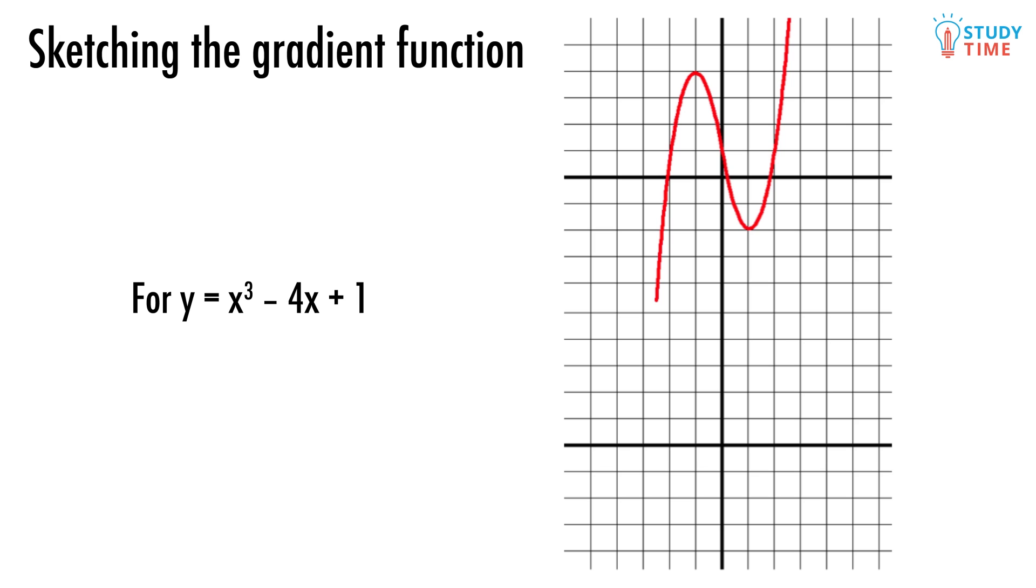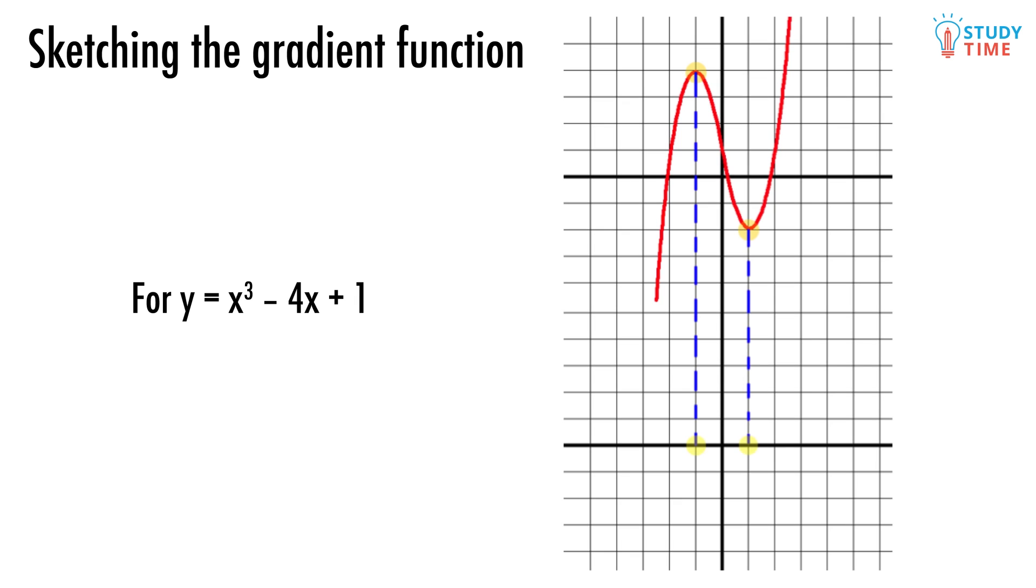Let's start out with the easiest part. Where are the turning points of the graph located? We find them, and then we draw some lines that go straight down to the bottom x axis.